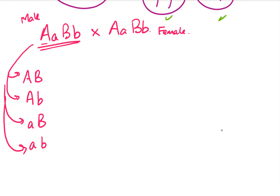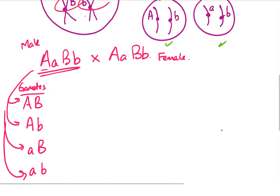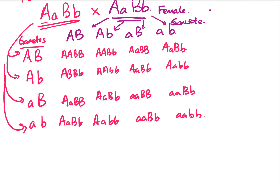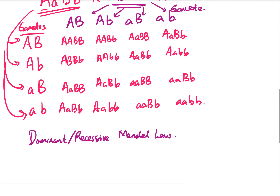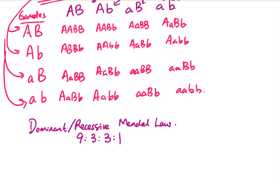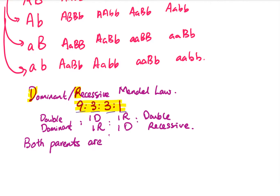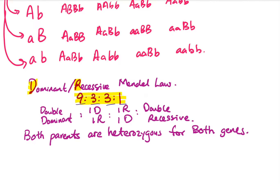Now let's do a non-linked dihybrid cross. The male is going to produce four gametes by random chance with equal probability, and the female is also going to produce four gametes with different genotypes by random chance and with equal probability. Listing out all the results of fertilizations in the Punnett square — assuming that the AB genes follow simple Mendelian dominant-recessive inheritance — you're going to get a 9:3:3:1 ratio for non-linked genes: 9 double dominant, 3 dominant/recessive, 3 recessive/dominant, and 1 double recessive.